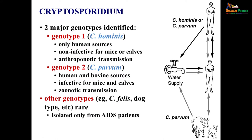For Cryptosporidium, there are 2 major genotypes: genotype 1, C. hominis, and genotype 2, C. parvum. Genotype 1, C. hominis, has only human sources and is non-infective for mice or calves, so there is only anthroponotic transmission from man to man. While genotype 2, C. parvum, has human and bovine sources, is infective for mice and calves, and there will be zoonotic transmission from animals to humans. Other genotypes such as C. felis and dog type are rare but can be isolated occasionally from AIDS patients.